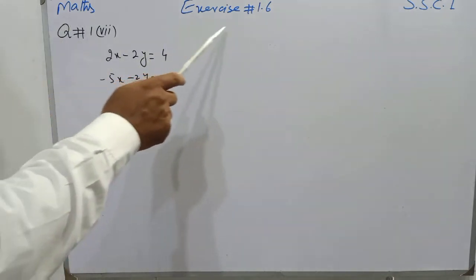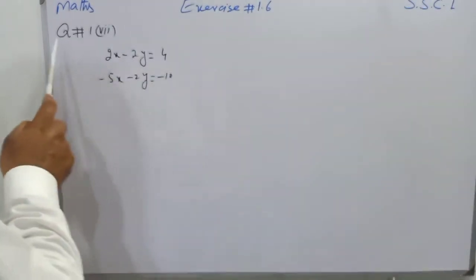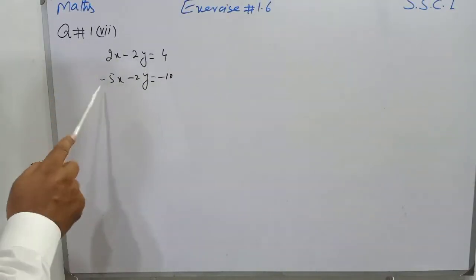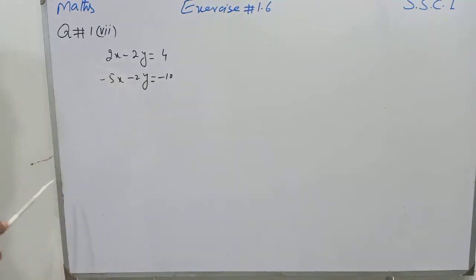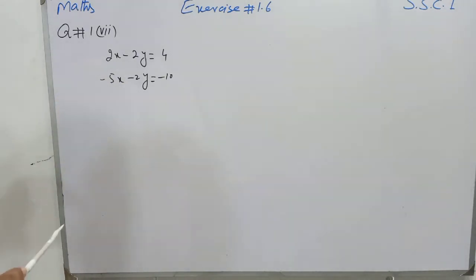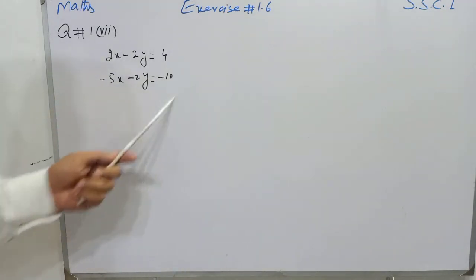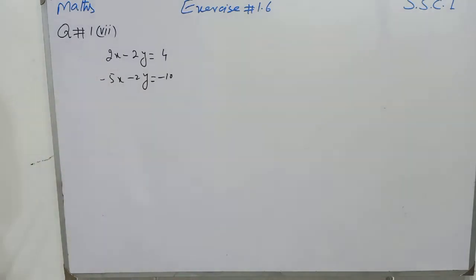Dear students, Mathematics Exercise No. 1.6, SSE 1, Question No. 1, 7th part: 2x minus 2y is equal to 4, and minus 5x minus 2y is equal to minus 10. We have to find the value of x and y by using the matrix inversion method and by using Cramer's rule. First we will convert these equations into the form of a matrix.